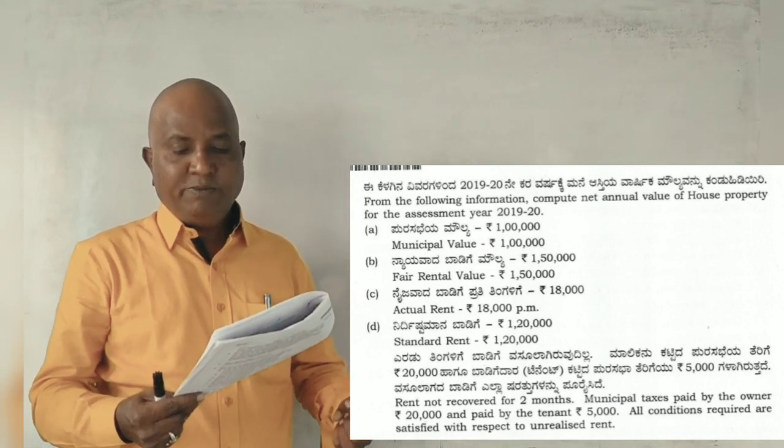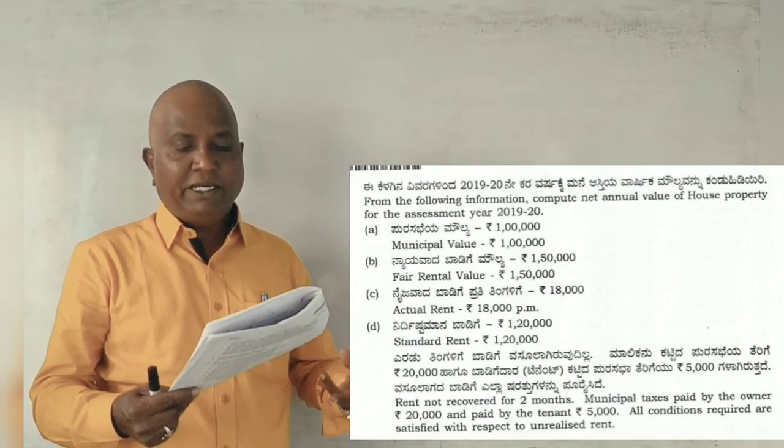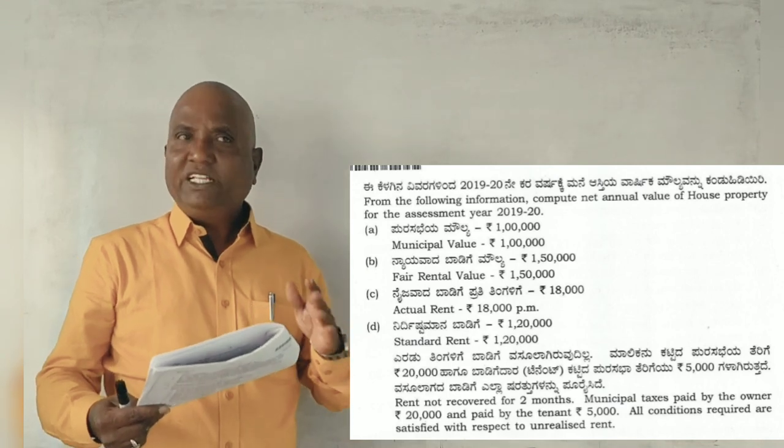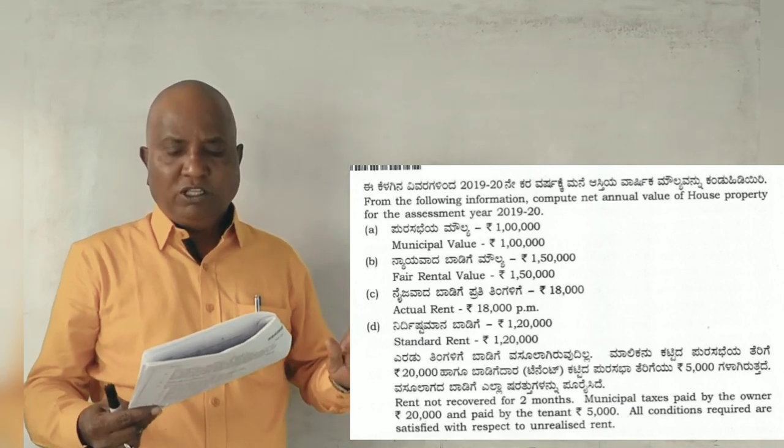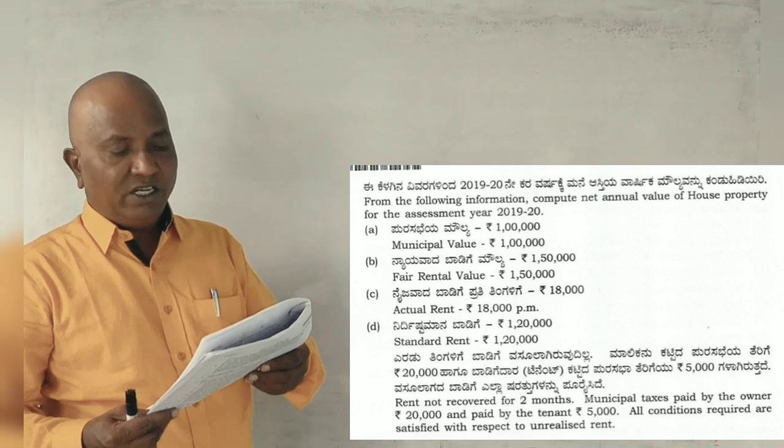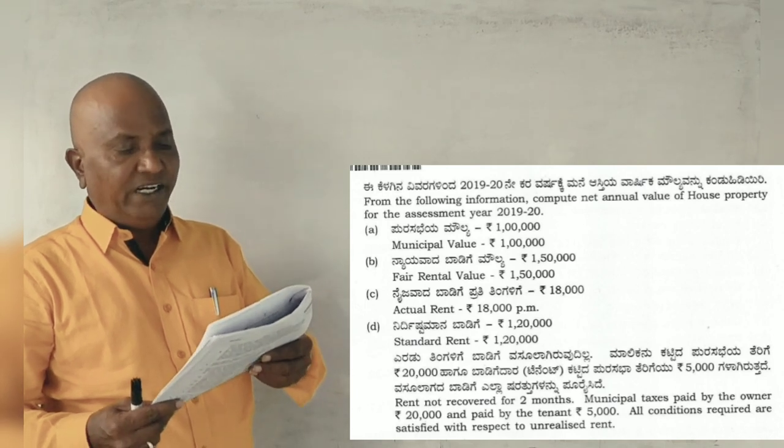Municipal tax is paid by the owner 20,000, paid by the tenant 5,000. 5,000 paid by the owner, paid by the tenant. All conditions are satisfied with respect to unrealized rent.